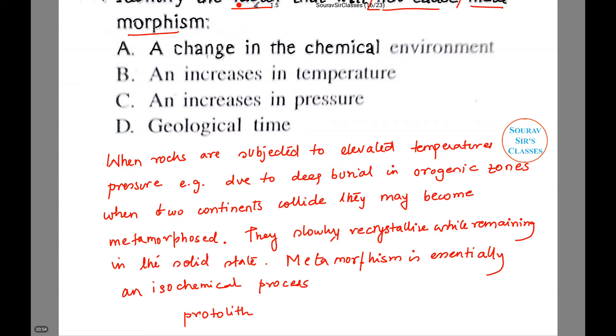...to metamorphic rock. Okay, so what we see: if you want conversion from original to metamorphic, you require high temperature, can be one cause. There can be high pressure. This can be a result of isochemical process.